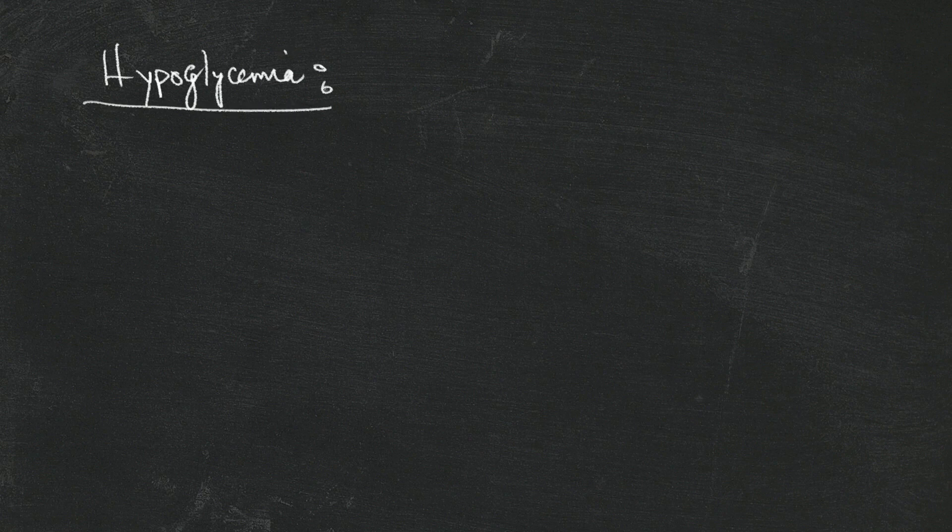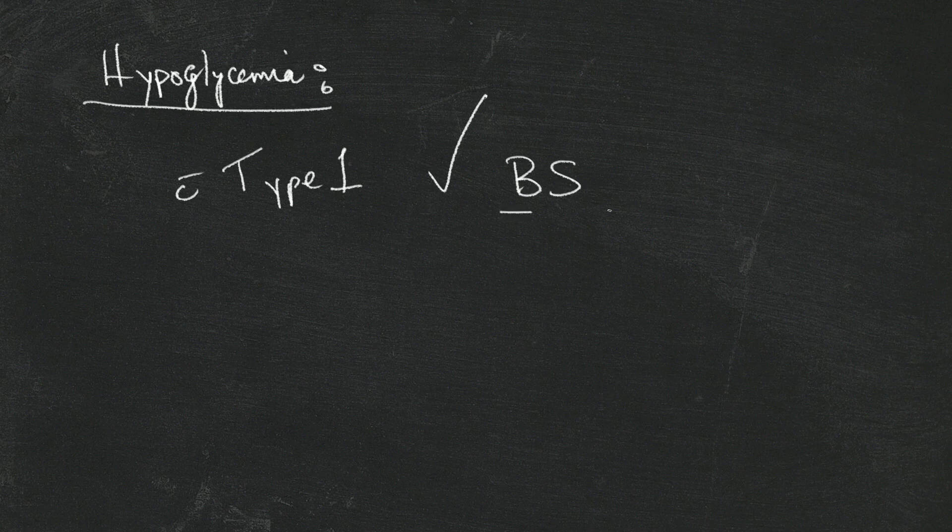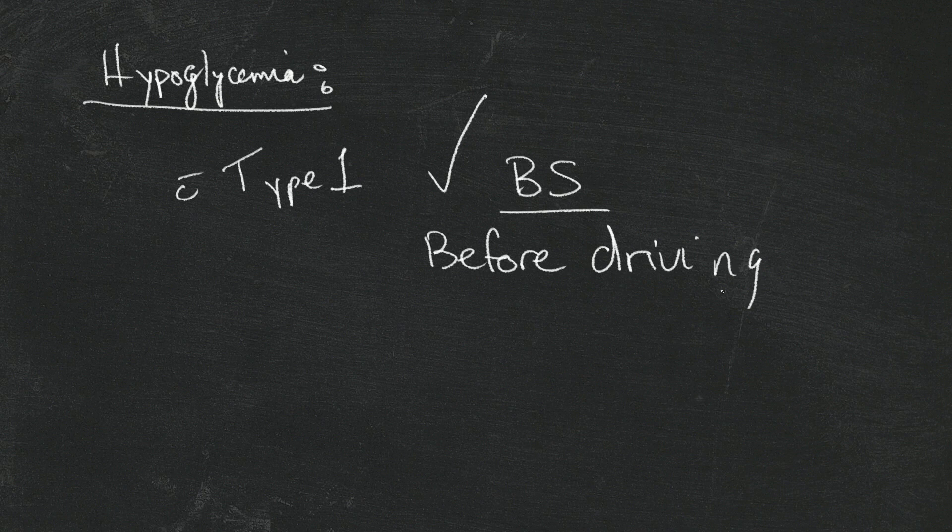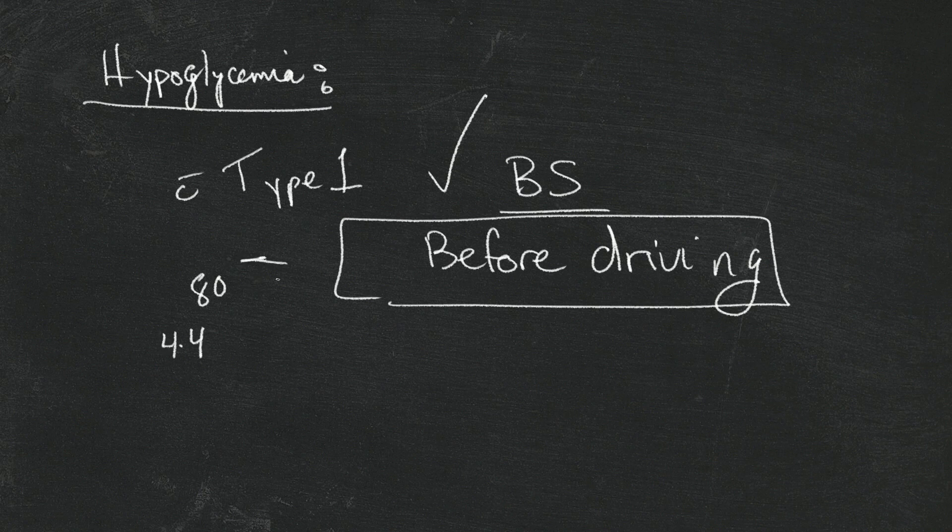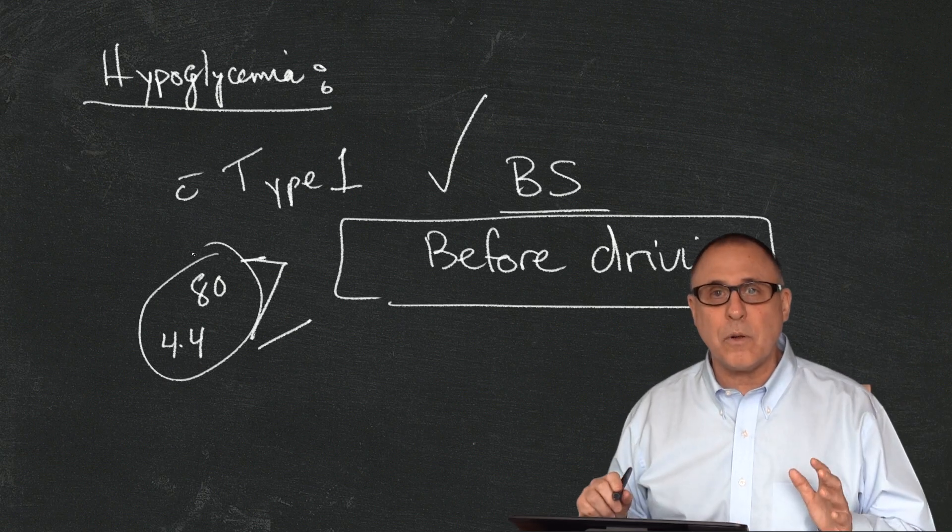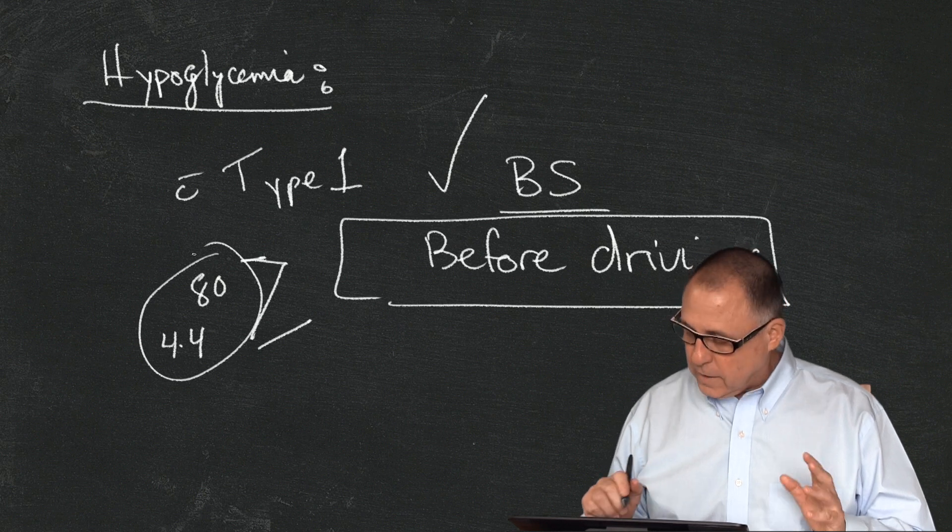Cool. The one last thing that I wanted to mention about hypoglycemia is that for all of us with type 1 diabetes, you must check your blood sugar before getting into a car. Why? Because if you're low while you're driving, it's sort of the same thing as being a drunk driver. I never get into my car behind the driver's seat unless I'm 80 or 4.4 and above.